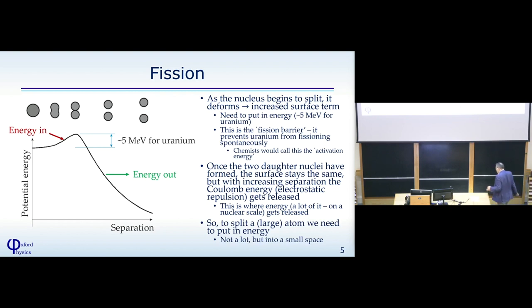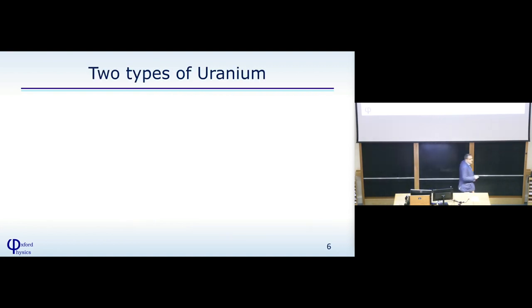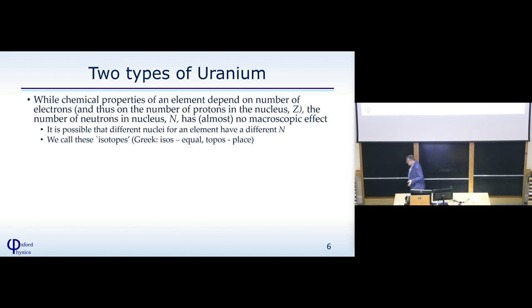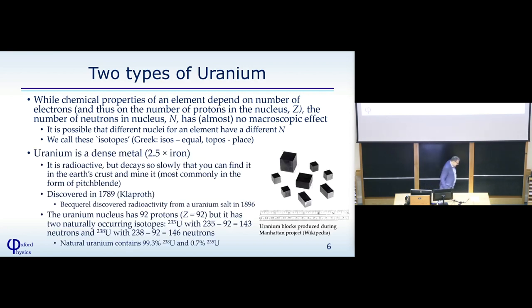So what do we have to do to split the nucleus? The first thing is we have to put a small amount of energy, 5 MeV we have seen is a very small amount of energy, but we have to put it into a very tight space. So before I do that, I want to also explain a little bit more about uranium.